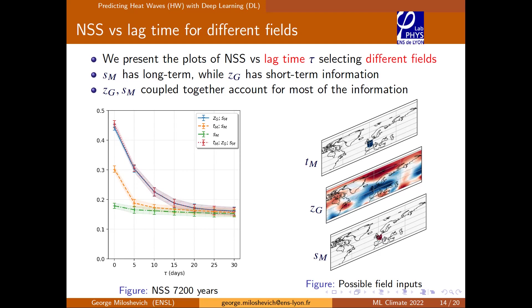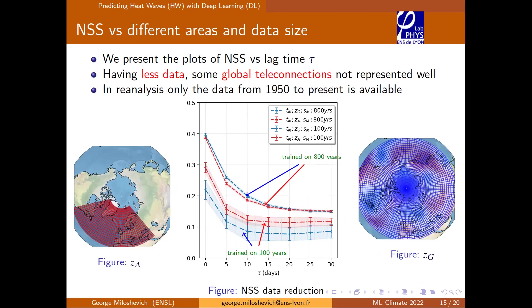Another important check: how much data do you need to make a prediction? We have 8,000 years from PlaSim, but in practice people often use reanalysis, which means only about 70 years of reliable data. We performed a data reduction study looking at subsets — varying both the number of years used for training and the geographic region provided to the neural network.